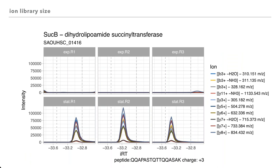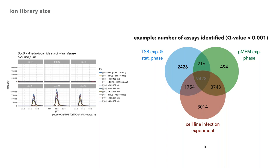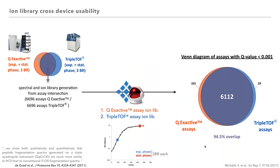A protein example for these on-off effects is protein B, a TCA cycle enzyme, which is not detectable in DIA-MS in the exponential phase when grown in complex media but is strongly induced in the stationary phase. In the Venn diagram, assay identifications from three different sample sets are compared, illustrating high proteome variability across complex media, chemically defined media, and infection setting. At the protein level, we could identify nearly 85 proteins only in the cell line infection setting. If we had not included these proteins in the library, we would have missed them.